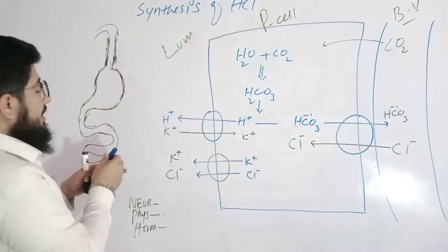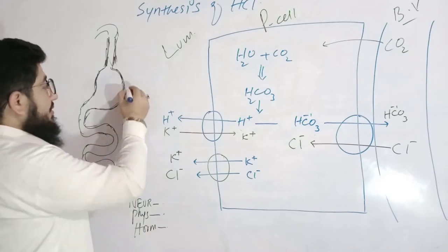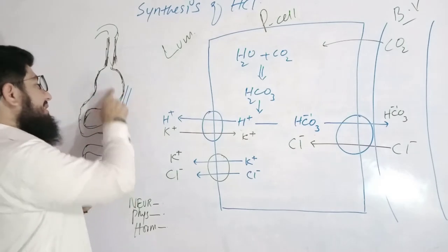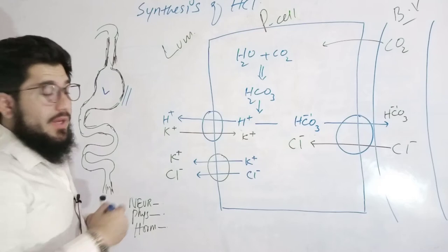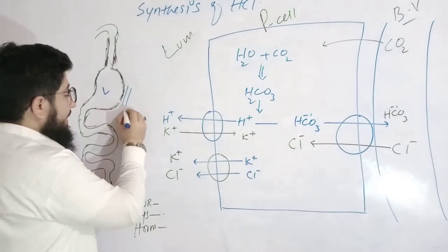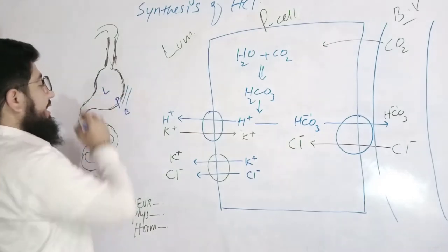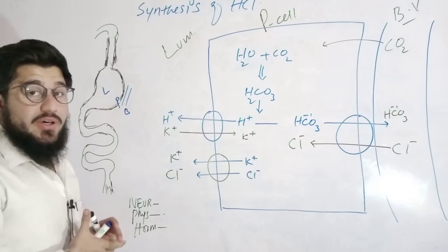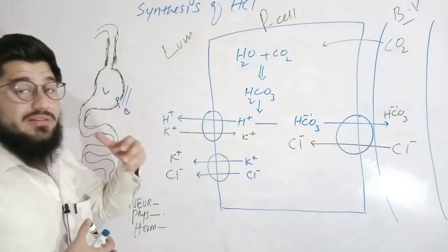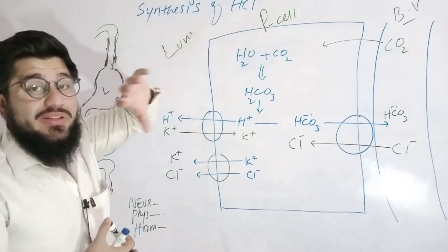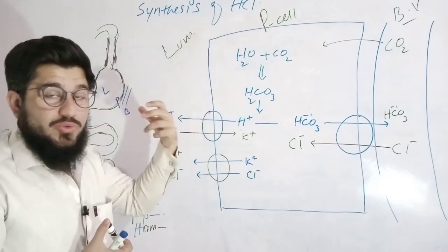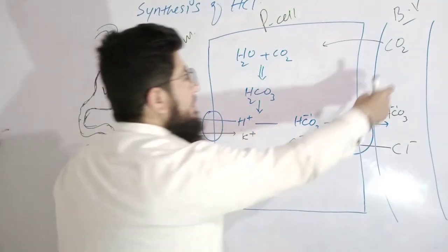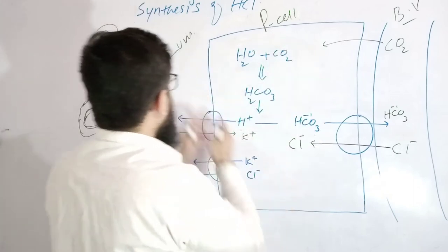Consider this diagram. Here is the blood vessel supplying this particular organ, the stomach. Here we have parietal cells, and this internal structure is named the lumen. Remember three important parts: blood vessels, parietal cells, and lumen. These three basic regions are key to understanding how hydrochloric acid is synthesized. Here is the blood vessel, here is the parietal cell, and here is the lumen.